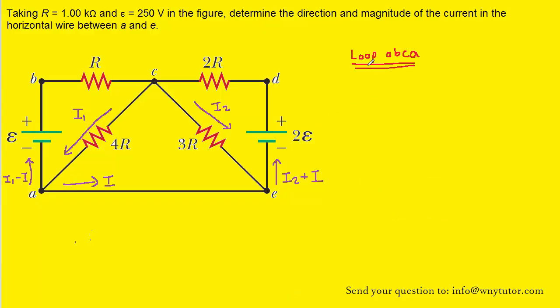We will next apply the loop rule to the loop that begins at point A, moves upward to point B, makes a right-hand turn to point C, and then returns back to point A — basically this right triangle right here.